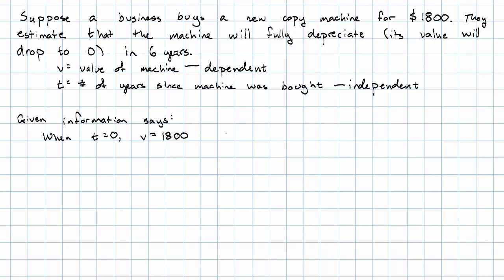v equals 1800. So that says the ordered pair (0, 1800) will be a solution to our equation.